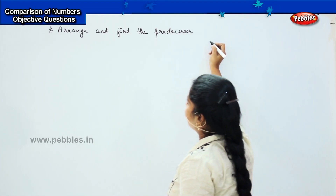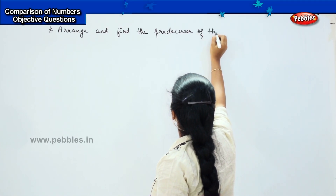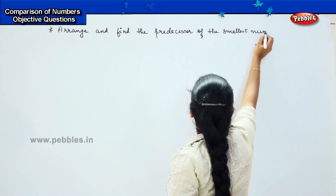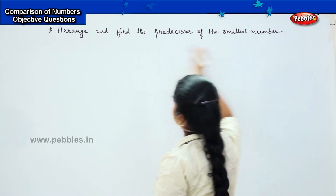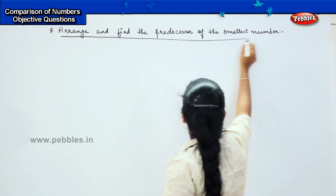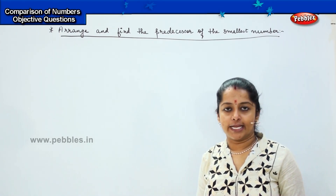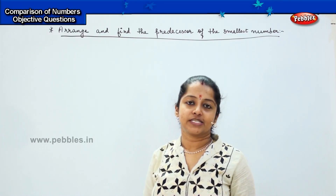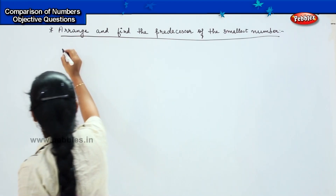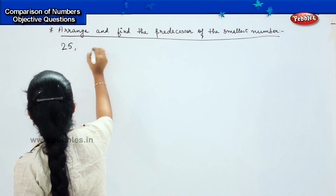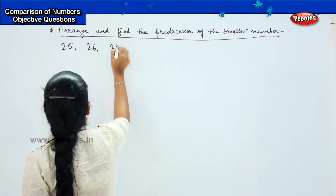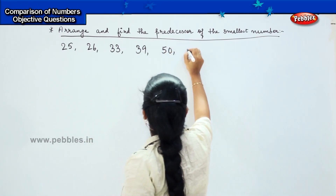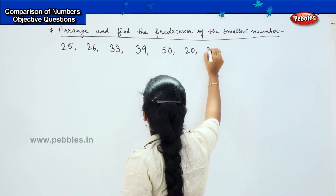Predecessor means a number before the given number — of the smallest number. Now I am going to give you a list of numbers. First, you need to arrange them from ascending to descending order. Find the smallest number and then you need to find the predecessor of the smallest given number. Your options are 25, 26, 33, 39, 50, 20, and 29.